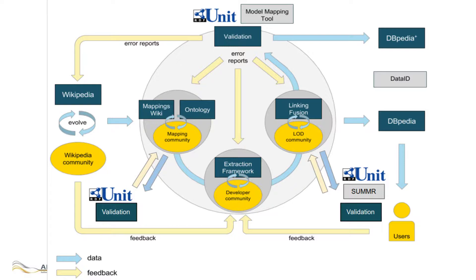We validated links from DBpedia to other datasets using the model mapping tool, validated DBpedia infobox ontology mappings to detect instance data errors stemming from the mapping process, and finally improved the data dissemination using Data ID.